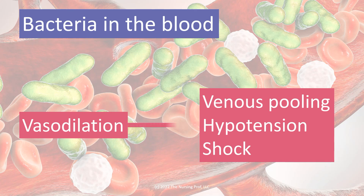Bacteria in the blood causes three things to occur. These mechanisms are normally used to help get rid of an infection or wall off an area — say, for example, you get a cut on your hand. The body puts parts of the inflammatory process in place to help heal that cut. One of those is vasodilation, which is designed to bring more blood and oxygen to the area of the injury. But when bacteria is floating through the blood causing vasodilation everywhere, it leads to venous pooling, hypotension, and shock.